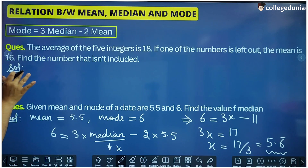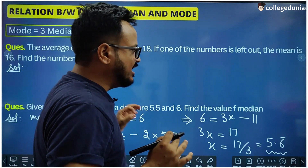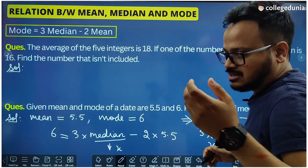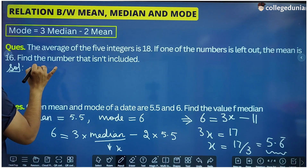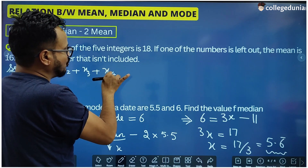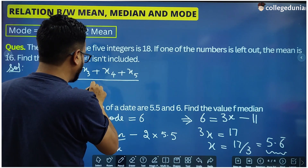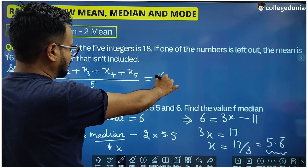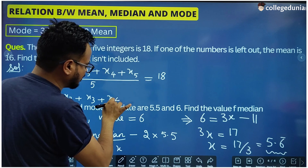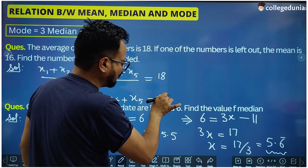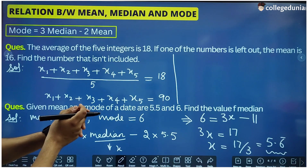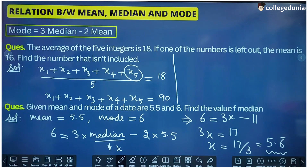Let us take one more general question on mean. The average of 5 integers is 18. If one of the numbers is left out, the mean becomes 16. Find the number which was left out. The sum of the 5 numbers is 18 × 5 = 90. When one number x5 is removed, the mean of the remaining 4 numbers is 16.